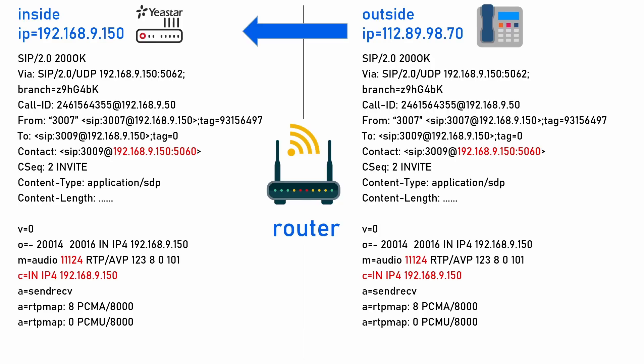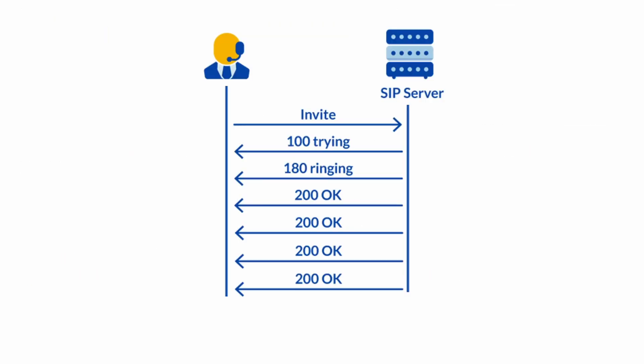Scenario two is when the PBX receives a call from an extension registered from an outside network. The Contact header uses a private IP address when sending 200 OK to the IP phone, which may cause the call to hang up after around 30 seconds. When you analyze the pcap file with Wireshark, you will see in the call flow that because there is a private IP address in the Contact header, the IP phone sends the ACK message there instead of the public address of the PBX. The solution is the same — configure NAT so that the 200 OK Contact header uses the public IP address.